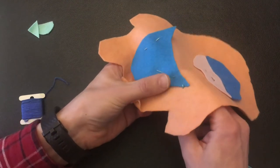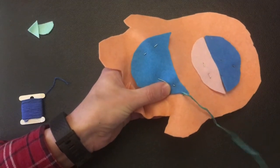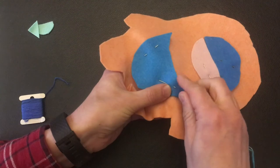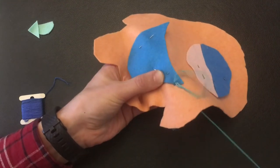And then poke back up inside and this will get the blue felt attached to this peach color. This is called applique.